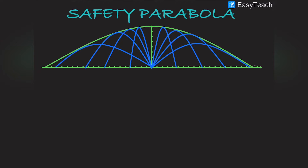In projectile motion, if I am projecting these projectiles at different angles but with the same speed — all are projected with same speed, let us say speed V — you can see that there are many common points which are common for two trajectories. These points are common for these two trajectories which are intersecting at these points.